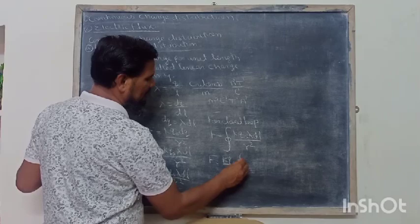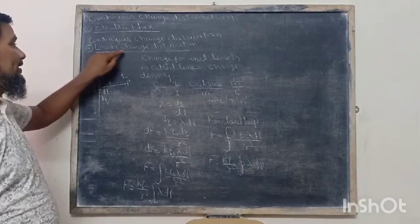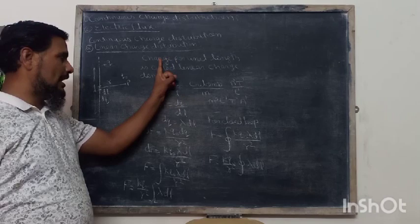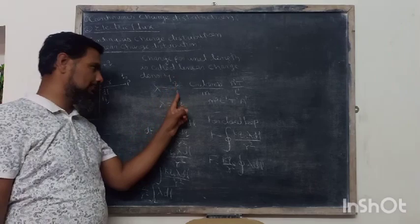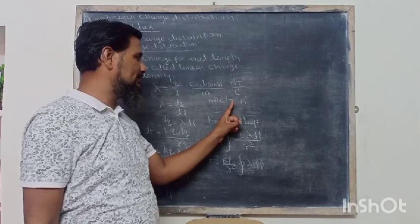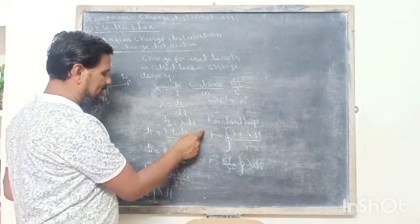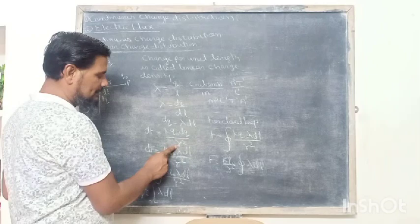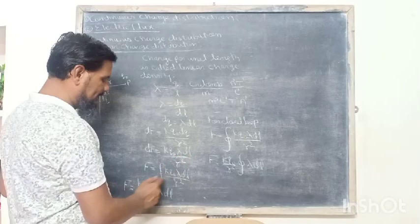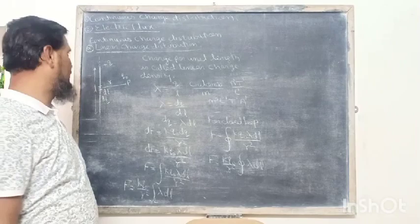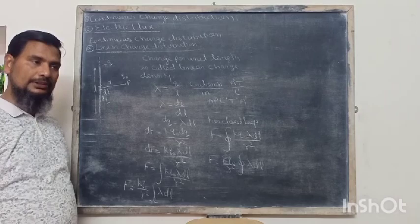For a closed loop, F is expressed as a closed line integral: K·Q0·lambda·DL / R², where K·Q0 / R² can be taken out. So this is the linear charge distribution — linear charge per unit length is called linear charge density, denoted by lambda. Lambda = Q/L, unit is coulomb per meter, dimensional equation M0·L⁻¹·T1·A1.